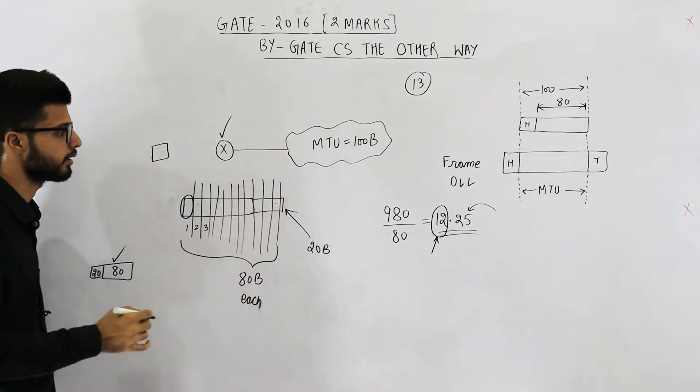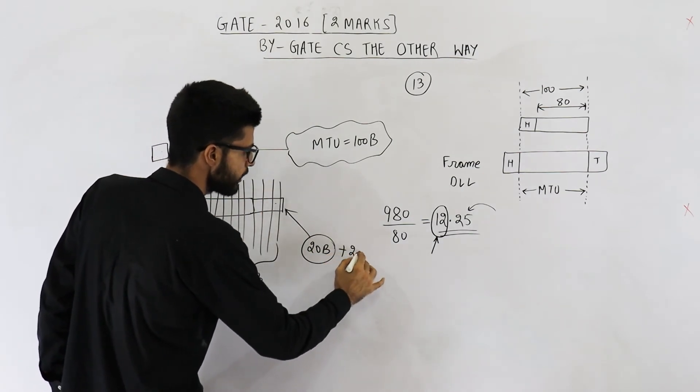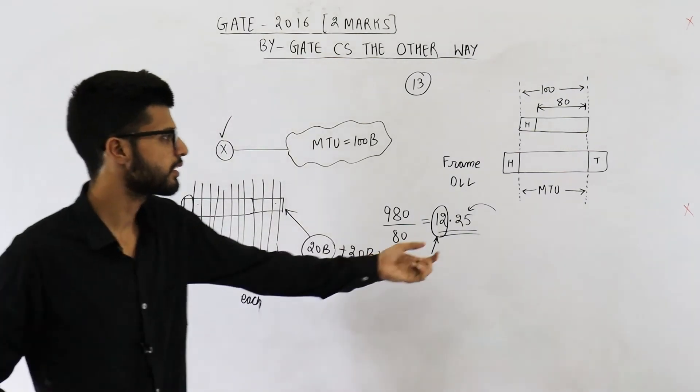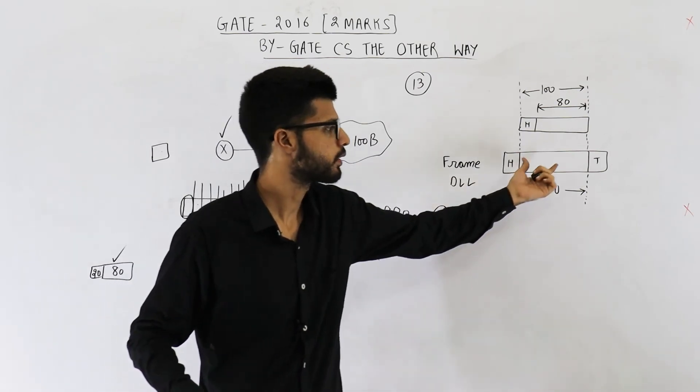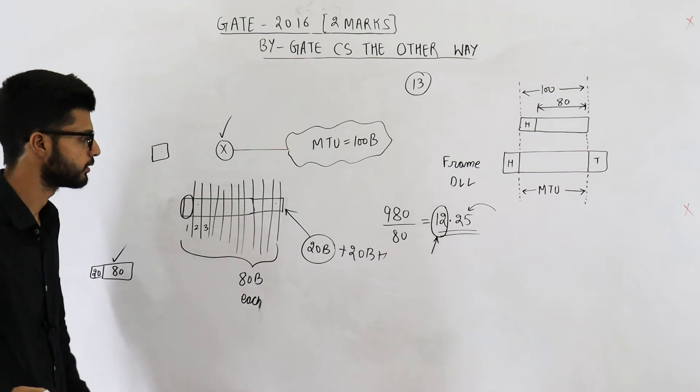And for the last one, there is 20 bytes data plus 20 bytes header. This is of 40 bytes only. So easily it can be placed in one frame because MTU is anyways 100. We are using only 40. So this can also be transmitted.